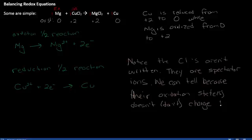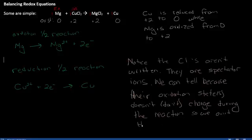It's common practice to omit spectator ions when working with oxidation-reduction reactions — it cleans up your workflow, and we can always put them back in later. I can show you that chlorine is negative one, it stays negative one, so these are what we call spectator ions.